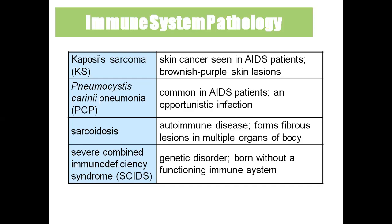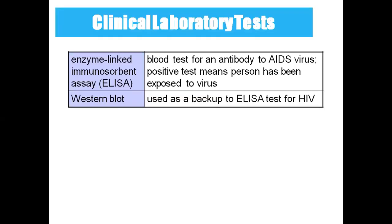Severe combined immunodeficiency syndrome is a genetic disorder — the baby is born without a functioning immune system. This is very similar to AIDS, except AIDS develops after a viral attack whereas in this condition the baby is born without an immune system itself.